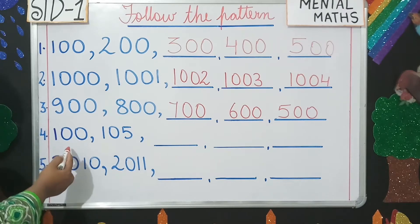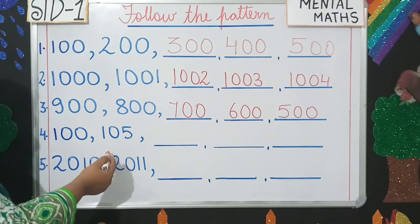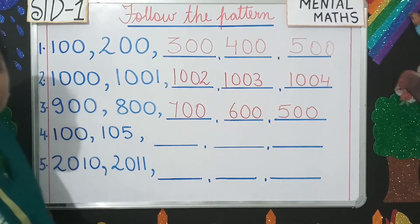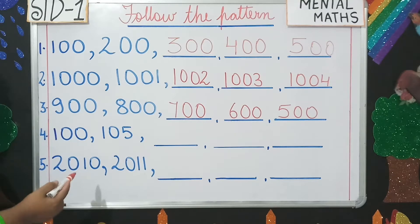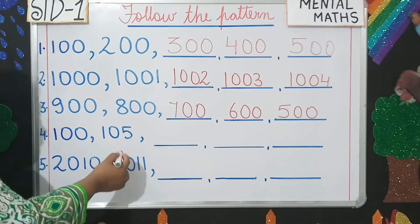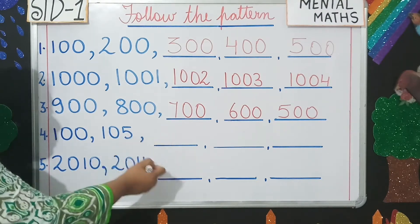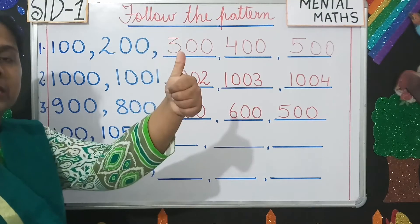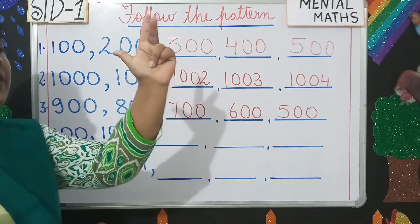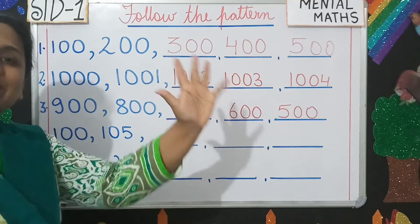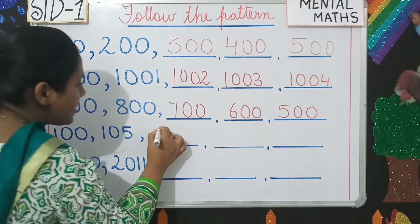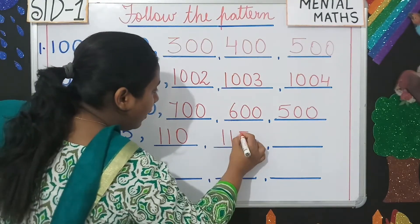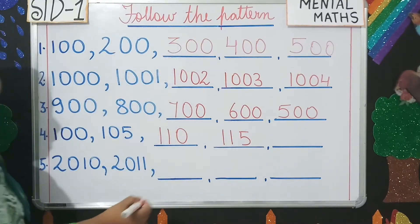Number four: 100, 105. What can you find here, students? There's a difference of 5. Let's keep counting by 5 — you'll count 5 after 105 and move forward. So after 105, count 5 more: 110. Then it will be 115, and then 120. Is this clear, students?